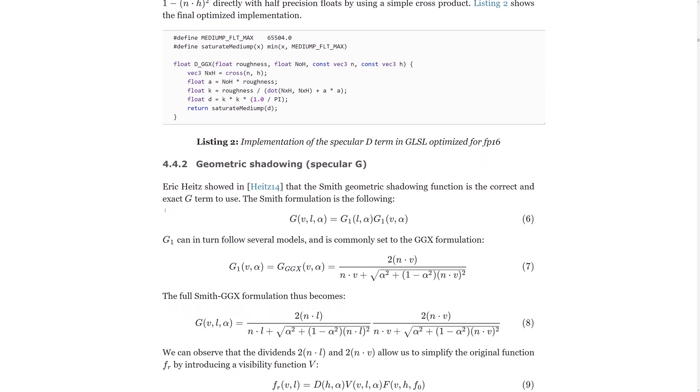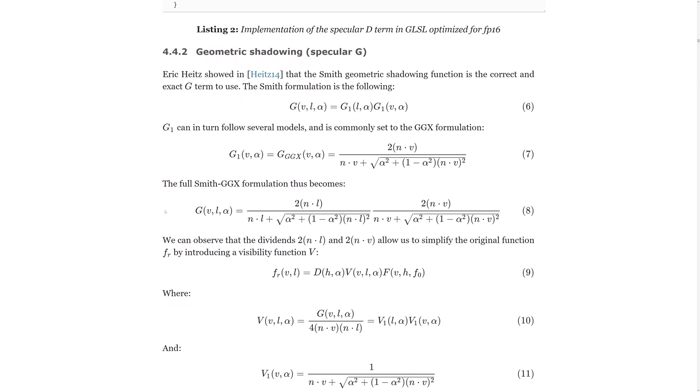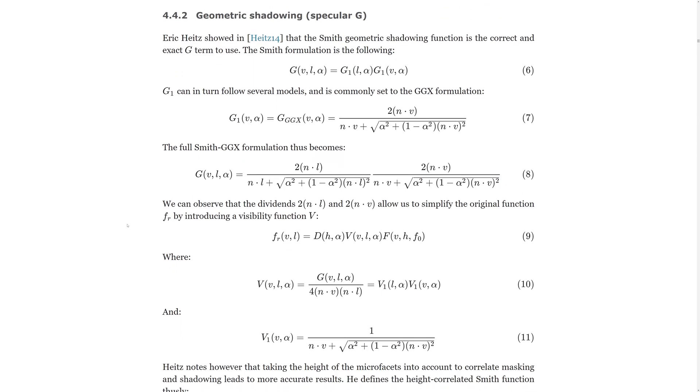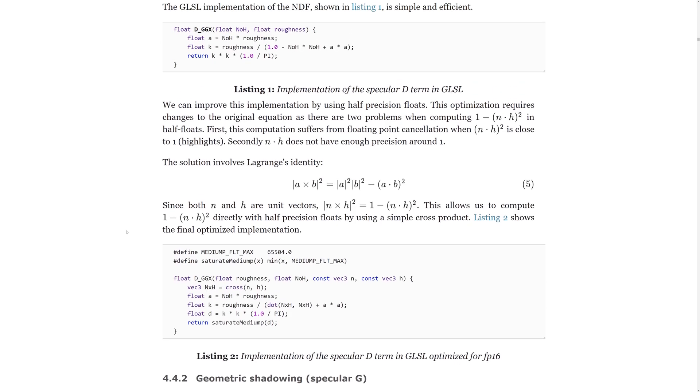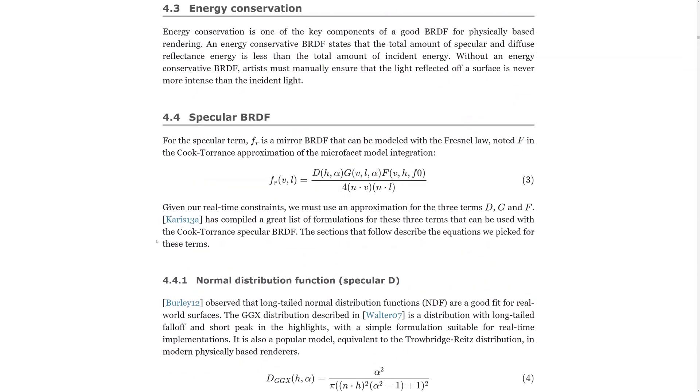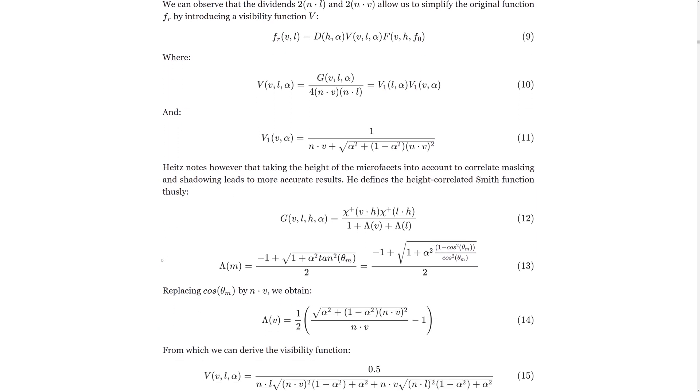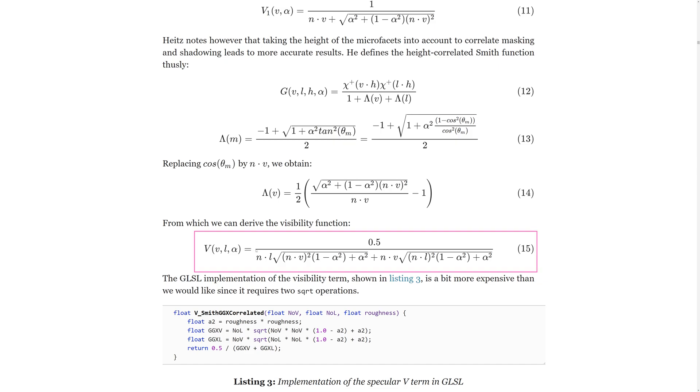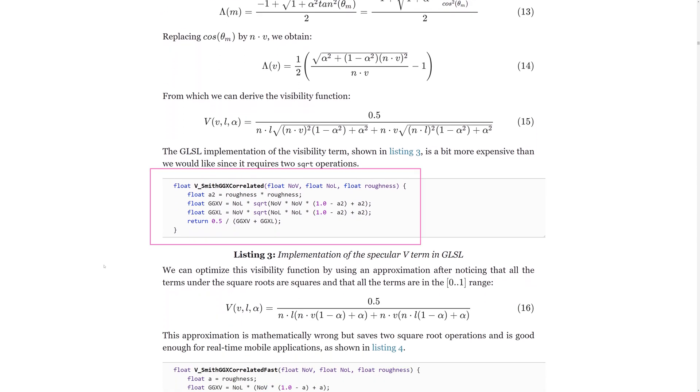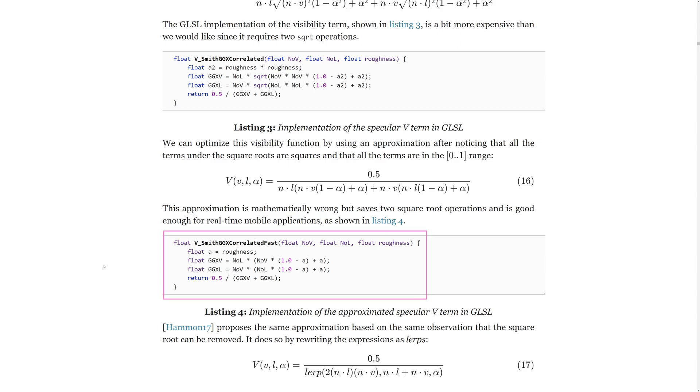Next is the geometric term and the flavor we'll be using is the Smith formulation given by this equation. It's a multiplication of the same function, once with the light direction and once with the view direction. As you can see, substituting the g function gives us this result, which has a 4 times n dot l times n dot v term. Looking back at the Cook-Torrance equation, we can see that these terms cancel out and we can write the Smith function like so. This function can be improved by taking the height of the microfacets into account and we end up with this equation, which can be implemented like this. We can also use an approximated implementation, which is faster to compute.